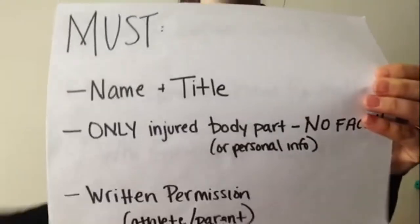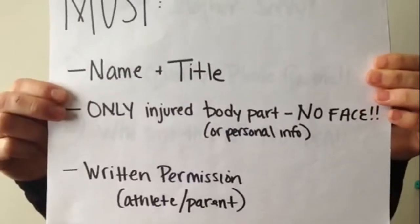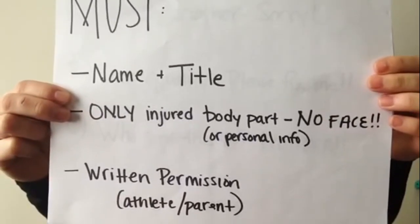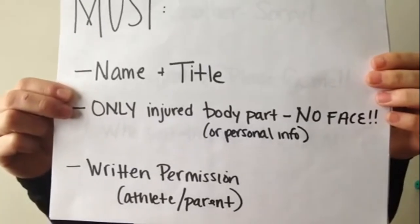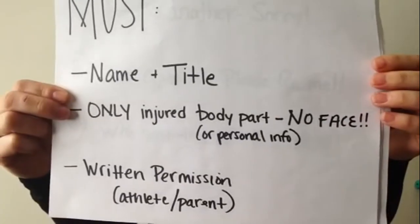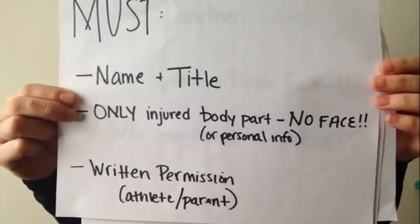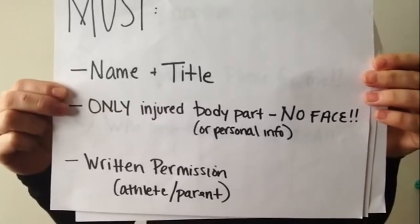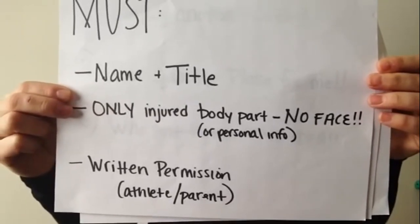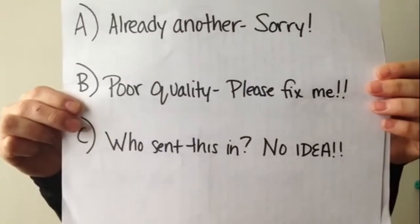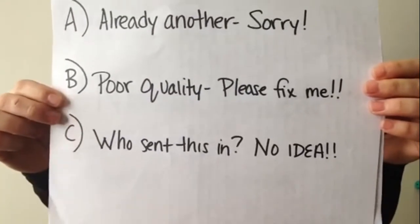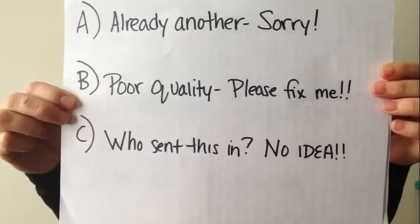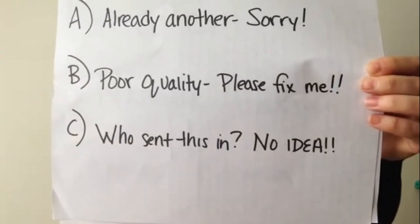Along with this email you must send your name and title, do not include a picture of the athlete's face — only of a body part — and written permission from the athlete or parent to use the picture in the application. You will be mentioned in the reference picture. We will review all of your sent-in material. If you did not receive an email from us saying your material was successfully uploaded, then either: a) there is already another video similar to yours, b) the quality of the photo or video is poor, or c) you did not properly tag yourself within the material in order for us to give you credit. We will send you an email regardless, letting you know if your material was posted or not.